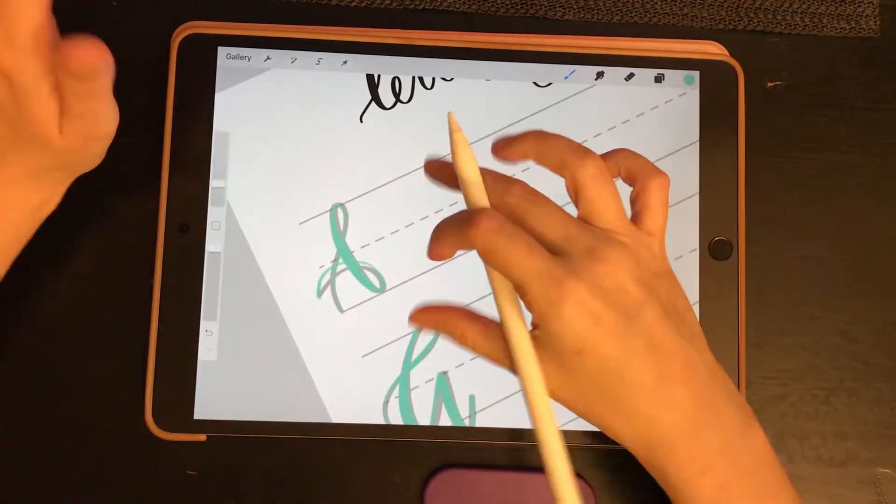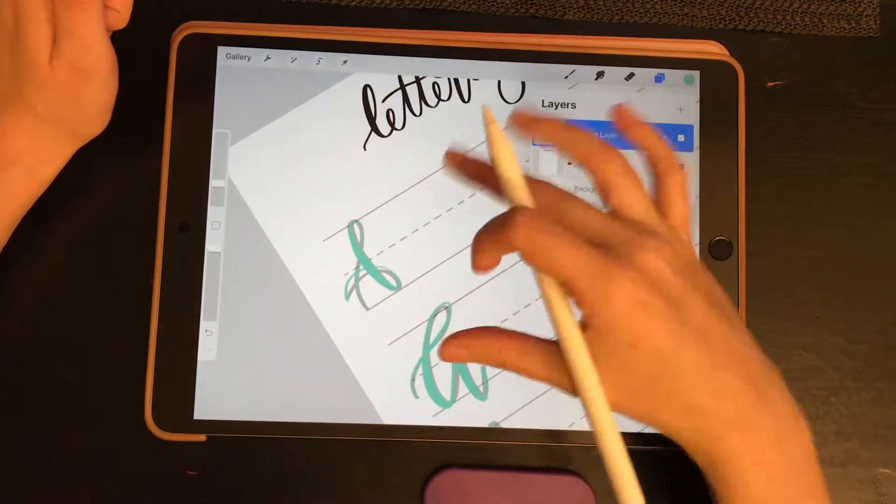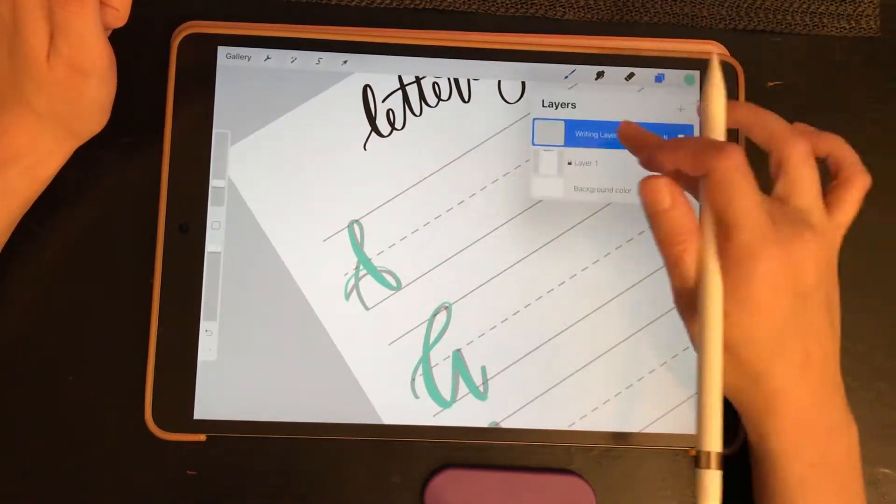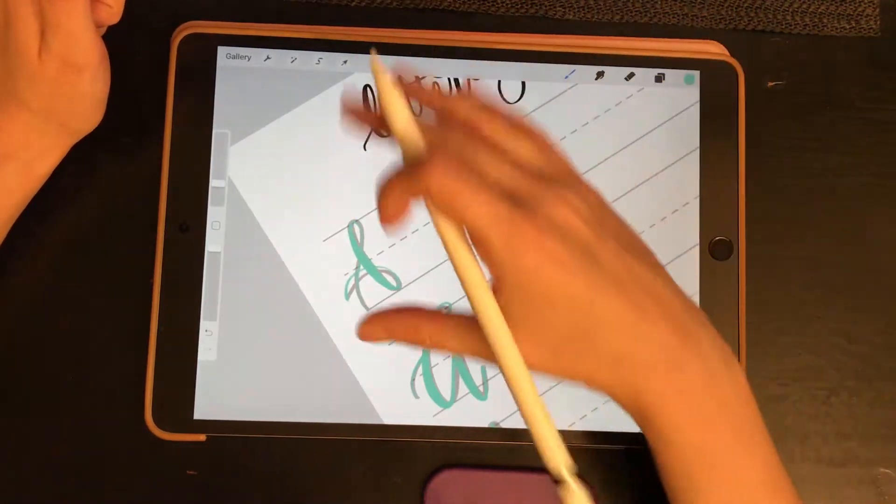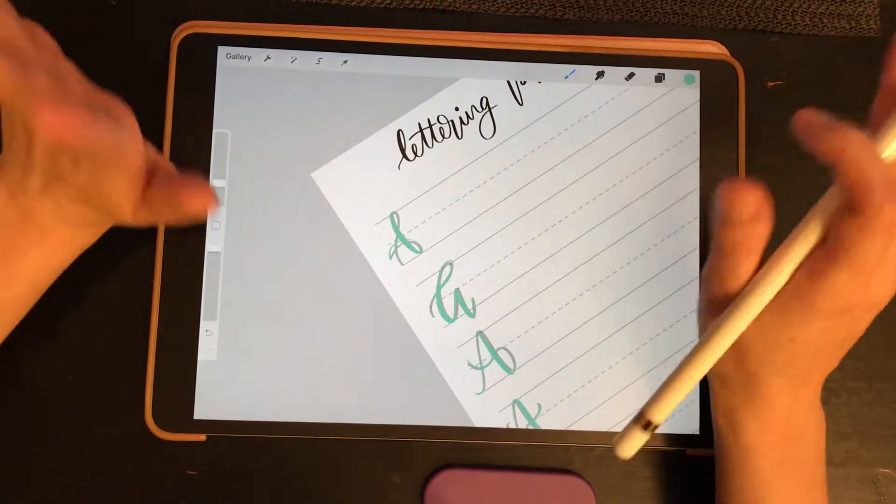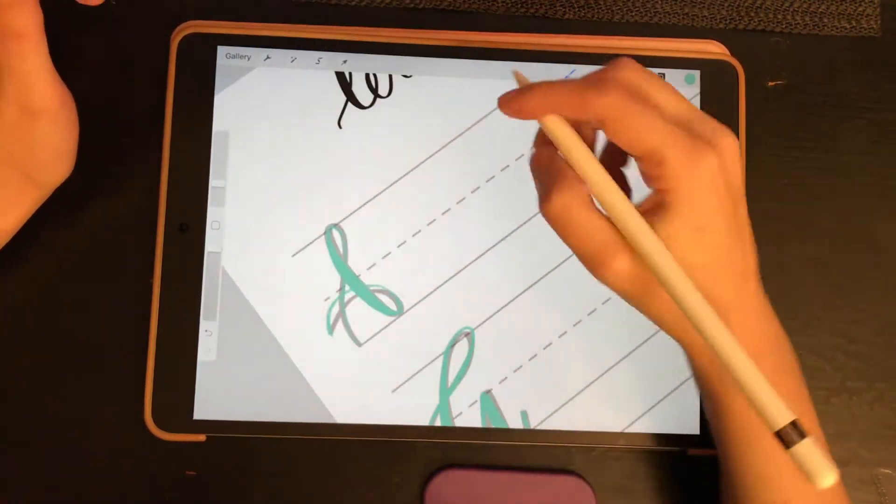So once you get comfortable with doing these, you're going to do them over and over and over again. And to clear them out, you just tap that layer and hit clear and it'll clear all of your letters out and you can start fresh again.